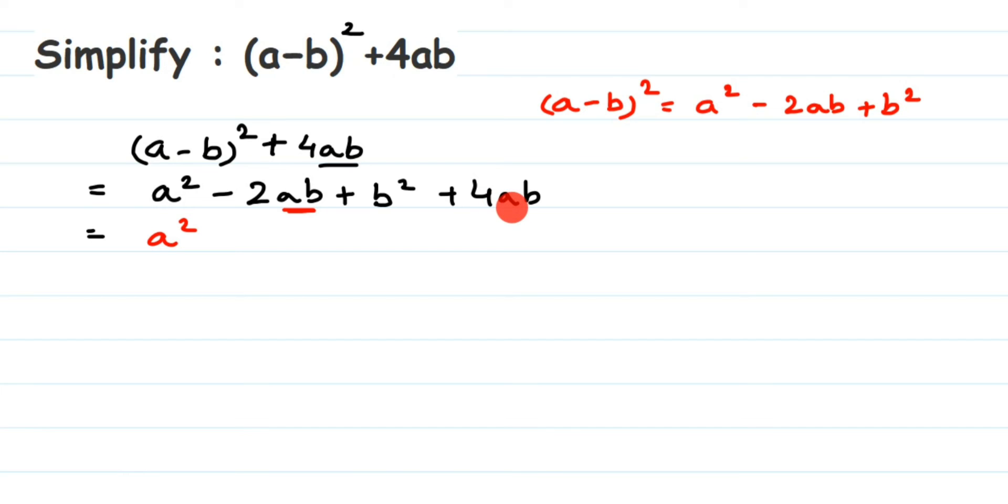The variables are going to remain the same; I have to solve the coefficients. So -2 + 4. Different signs means we have to subtract. So 4 - 2 will be 2, and the sign will be of the number which is greater. 4 is greater, its sign is positive, so we'll get +2. That is why we got +2ab.